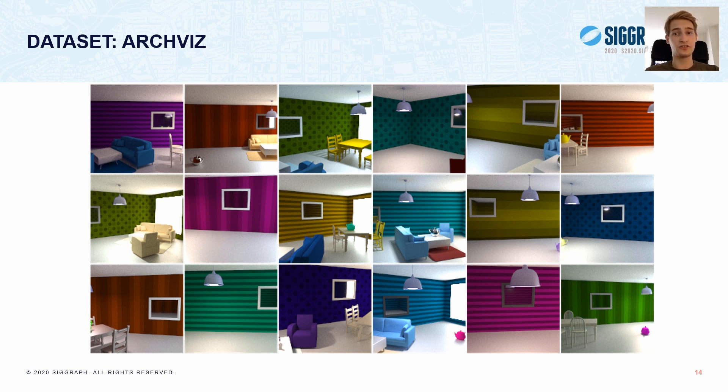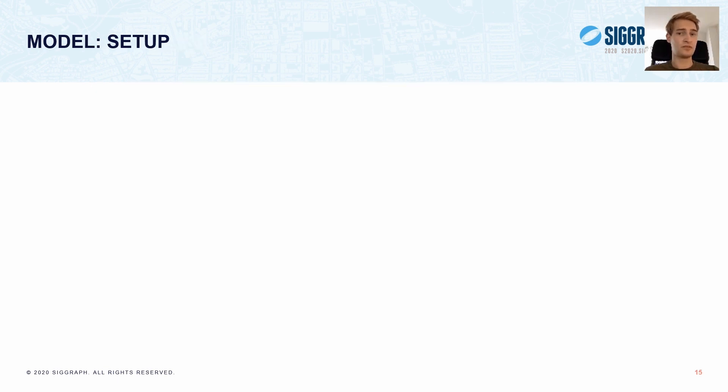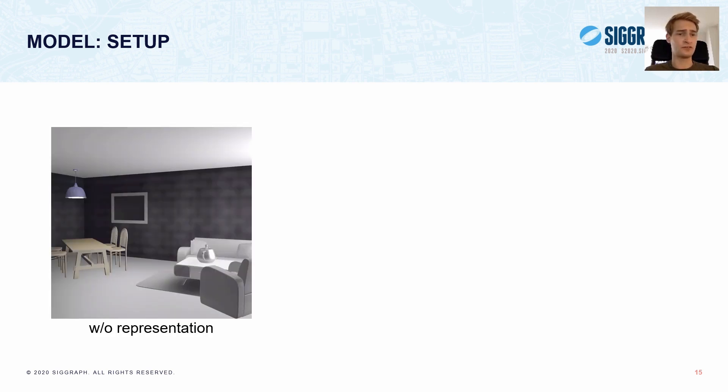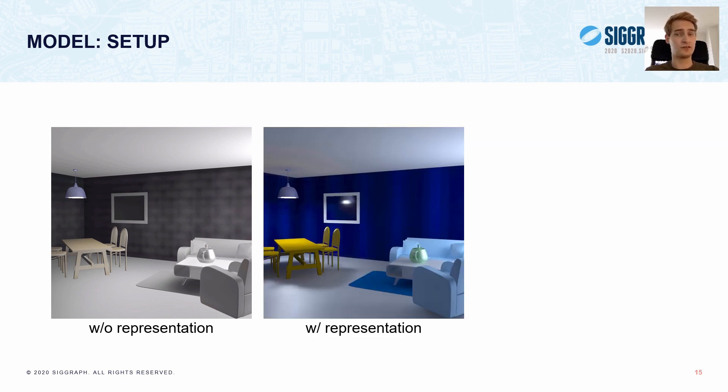Here are some images from one of our datasets. It's these simple indoor scenes with some randomized furniture and materials. So, for example, if we train the generation network on the previous dataset, only with the gbuffer as input and no neural scene representation, this is the type of result that we get. It learns to produce this average lighting and materials of the training set. And if we include the representation, we get the correct materials and lighting.